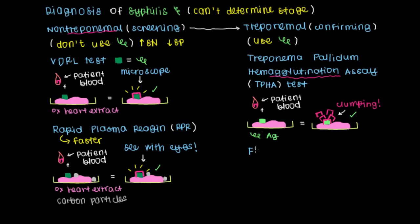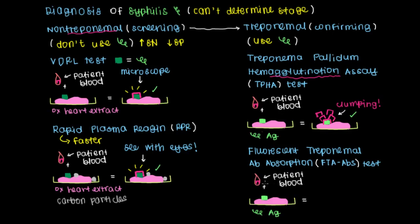The last of the treponemal tests I'll mention is what's referred to as a fluorescent treponemal antibody absorption test, which in some places you might see abbreviated as FTA-ABS. Now this is a similar setup as the hemagglutination assay test we saw above. I'll take this minute to label that the antibodies I've been talking about are that protein in the blood there.